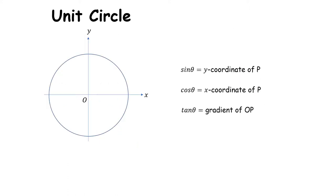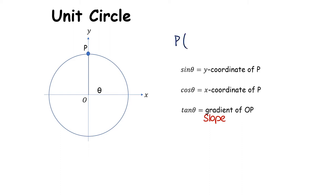So sin θ is the y-coordinate of P, and cos θ is the x-coordinate of P. Tan is the gradient or slope of OP. As we move point P around the circle, we get a bigger angle, and each of those points can be written as (cos θ, sin θ), where θ is the angle between the positive x-axis and the line OP.